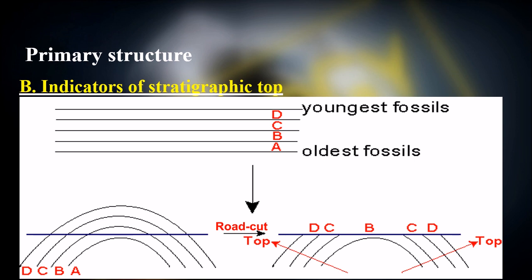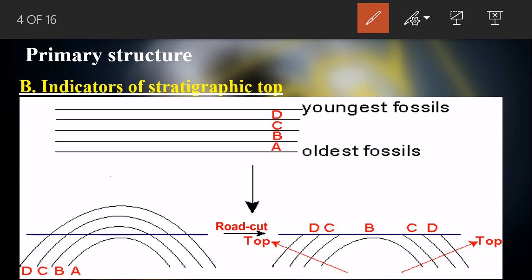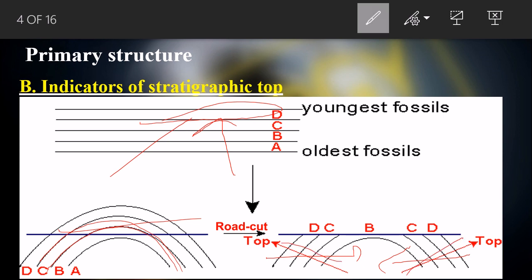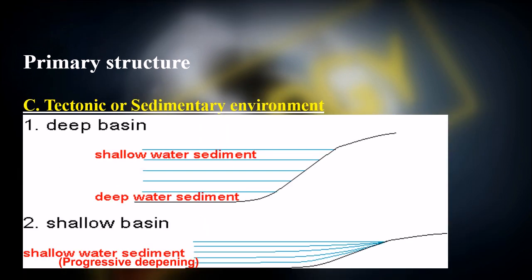Primary structures are indicators of stratigraphic top. For example, if deposition occurs from top to bottom, the youngest fossils will be at the top. If deformation bends a bed and the top is eroded, these structures still tell us which direction is 'up' — the younging direction. These kinds of indicators are primary structures.